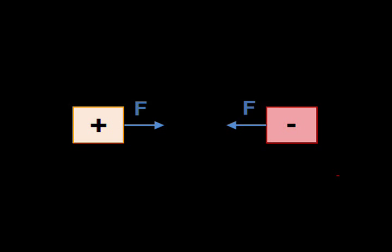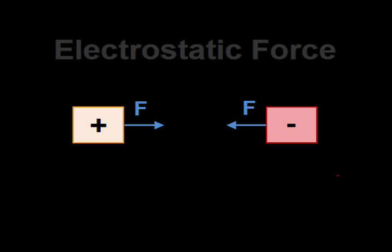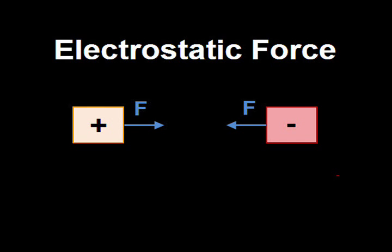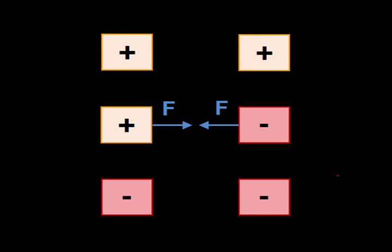When two bodies having unequal charges are near each other but not touching, an electric force is exerted between them because of their charges. Their charges cannot equalise since the two bodies are not in contact and current cannot flow. This electric force is known as electrostatic force. Bodies with unlike charges will attract each other, whereas bodies with like charges will repel each other.